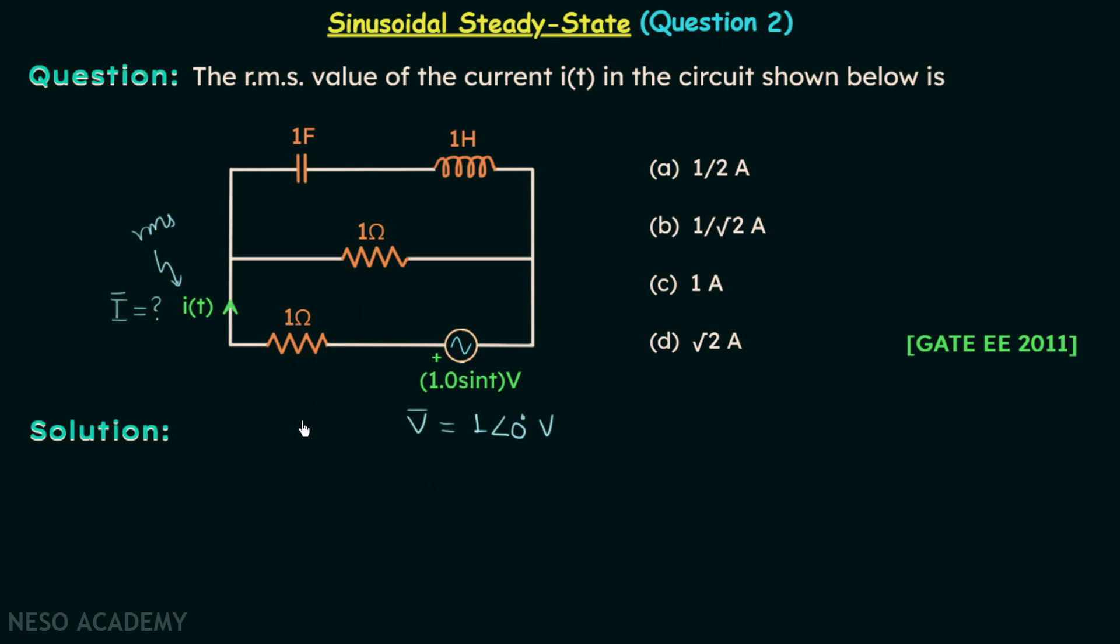Resistances will remain as it is. Here in place of 1 farad we will have negative of j xc. Here instead of 1 henry we will have j xl.